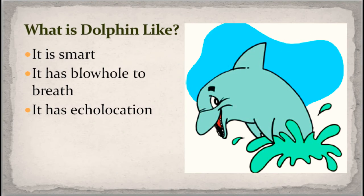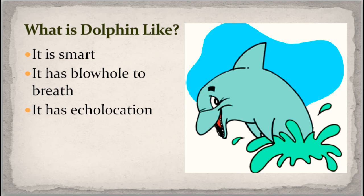What is dolphin like? It is smart — like you! And it has a blowhole to breathe, because dolphin is a mammal. Dolphin cannot breathe underwater — karena dolphin itu adalah mamalia, dia tidak bisa bernafas di bawah permukaan air. Sehingga dia perlu keluar dari air untuk bernafas, dan memiliki lubang yang dinamakan blowhole di atas kepalanya. Dia mengeluarkan suara untuk mengetahui benda di sekitarnya.